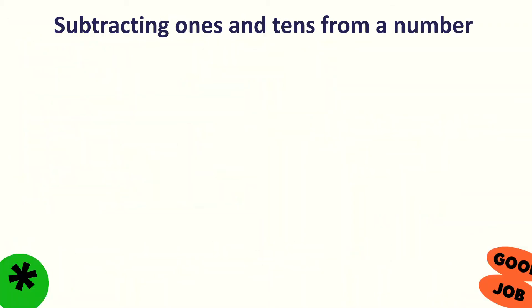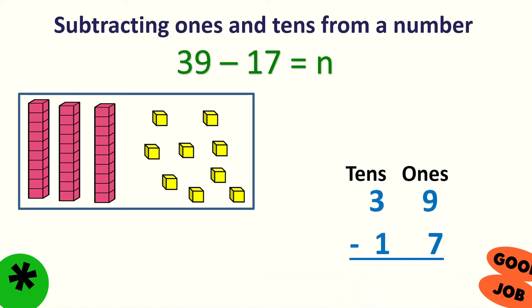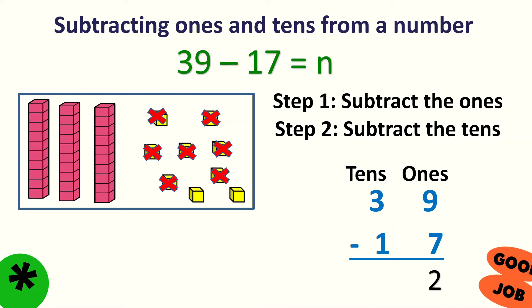Let's subtract ones and tens from a number. We have 39 minus 17 equals n. This time, it is best to use the second method. 39 is 3 tens and 9 ones. Write it in vertical form. Subtract the ones: 9 minus 7 — take away 7 from 9: 1, 2, 3, 4, 5, 6, 7. How many are left? 2. Next, subtract the tens: 3 minus 1 — take away 1 ten. How many left? 2. So, 39 minus 17 equals 22.